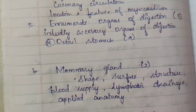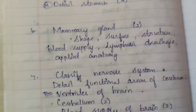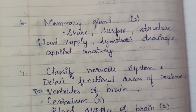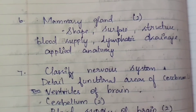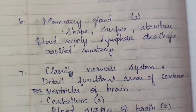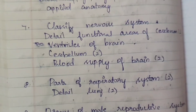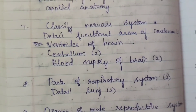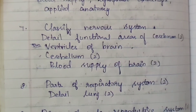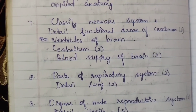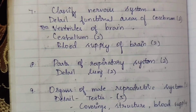Stomach topics include histology, applied anatomy, structure, blood supply, and clinical significance. Sixth question: mammary gland appeared 2 times — 1 for 15 marks, 1 for 5 marks. Subtopics include shape, surface structure, blood supply, lymphatic drainage, and applied anatomy. Next: classify nervous system; functional areas of cerebrum appeared 2 times; ventricles of brain for 5 marks; blood supply of brain appeared 2 times.